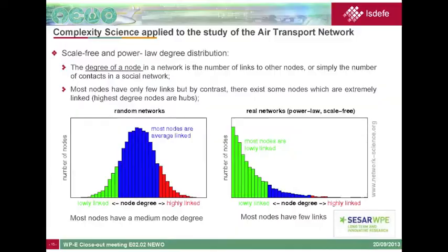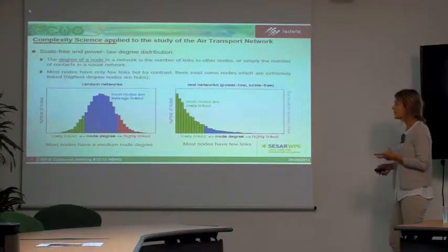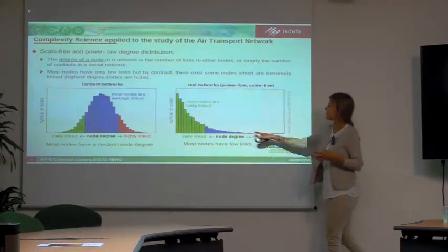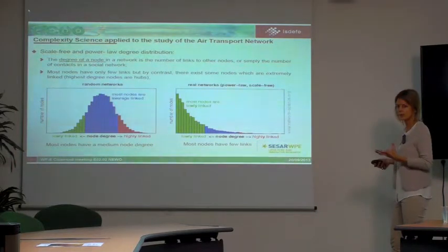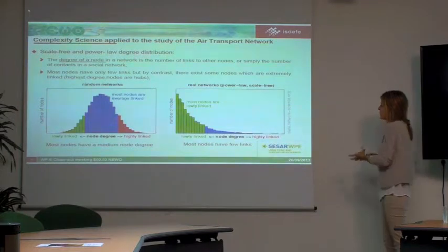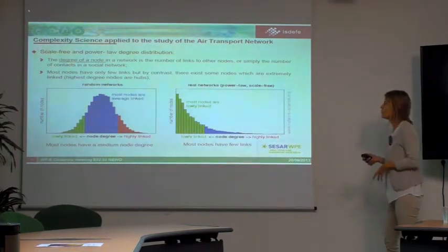The air transportation network exhibits a scale-free, power-law distribution. In random networks, most nodes have an average node degree, but in real networks like the air transportation network, most nodes have few links while some are extremely connected — this long-tail distribution is called a power-law distribution.